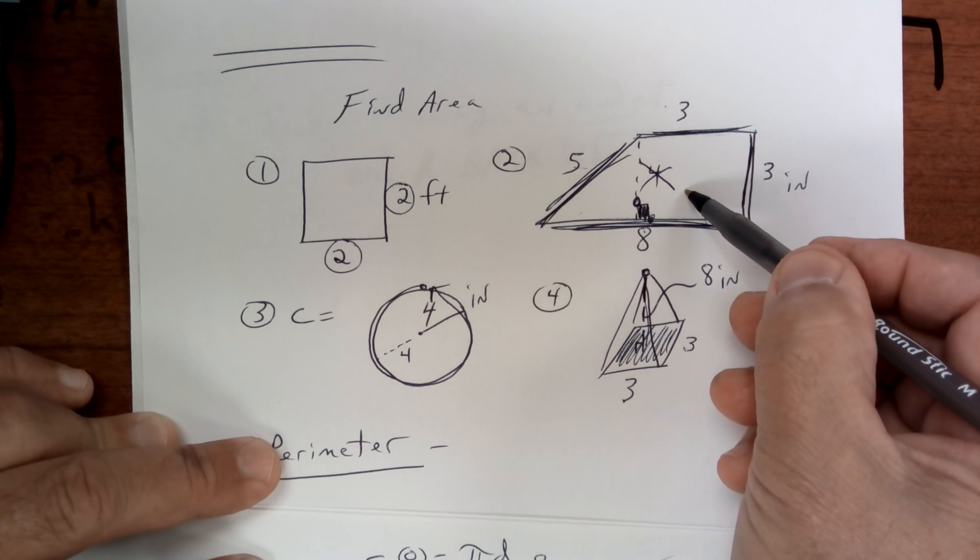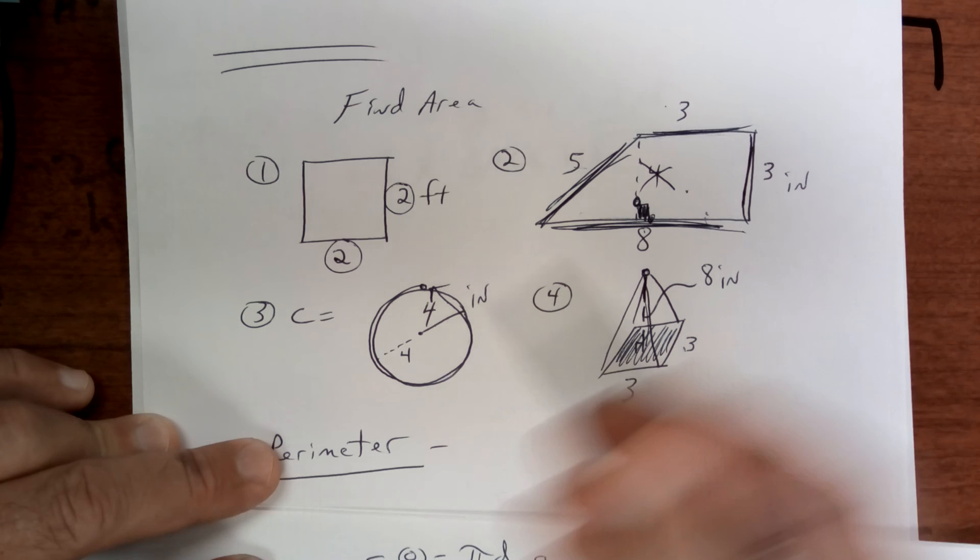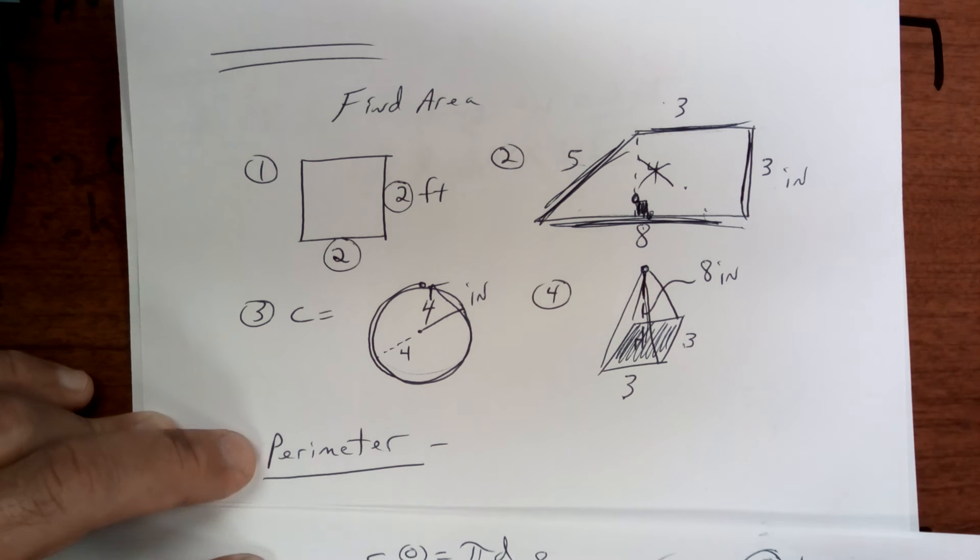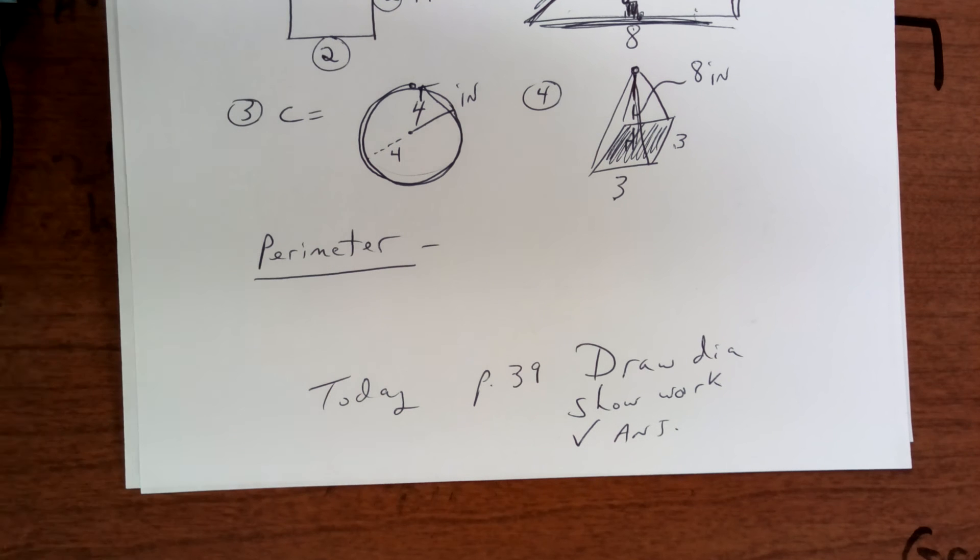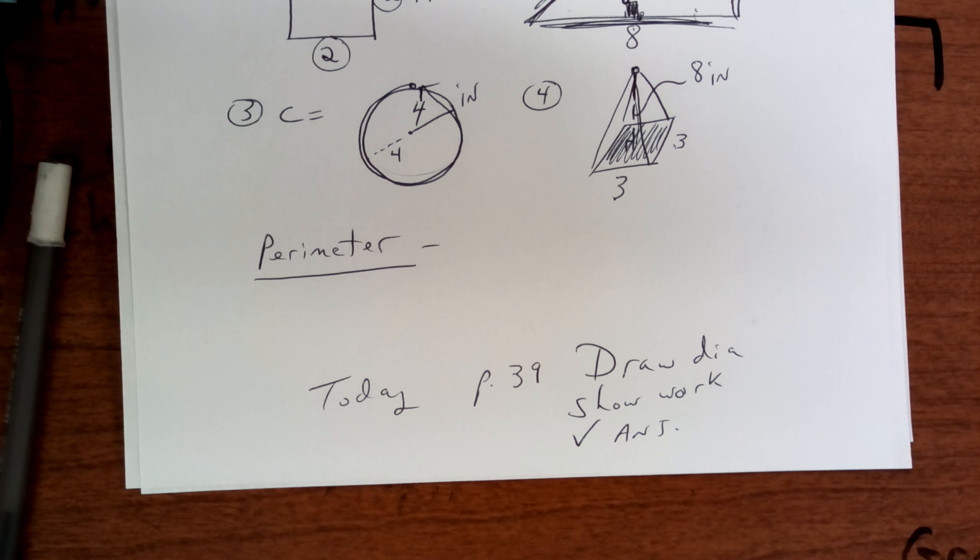Okay, so perimeter and circumference are basically the distance around something. Okay, today's work is right here. Make sure you draw the diagrams. It's in the book, and I'll put the book on Canvas as well. Have a good morning.